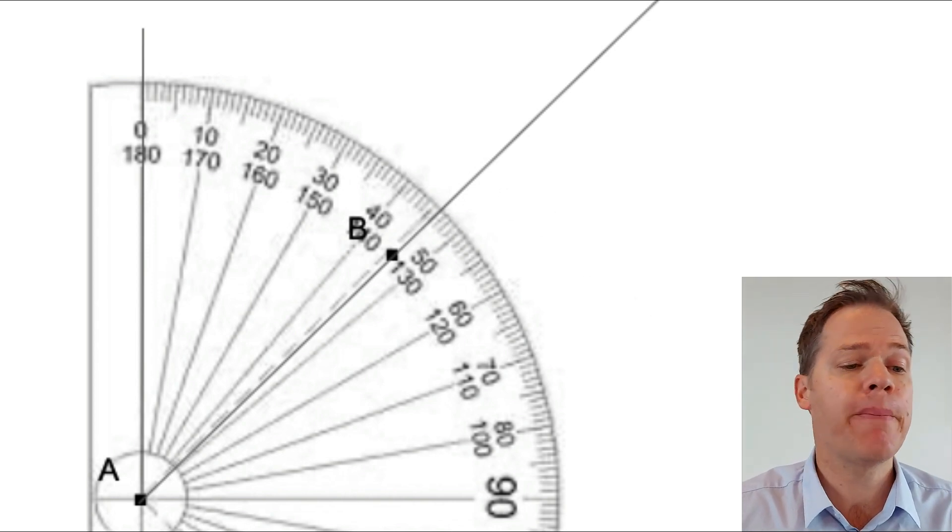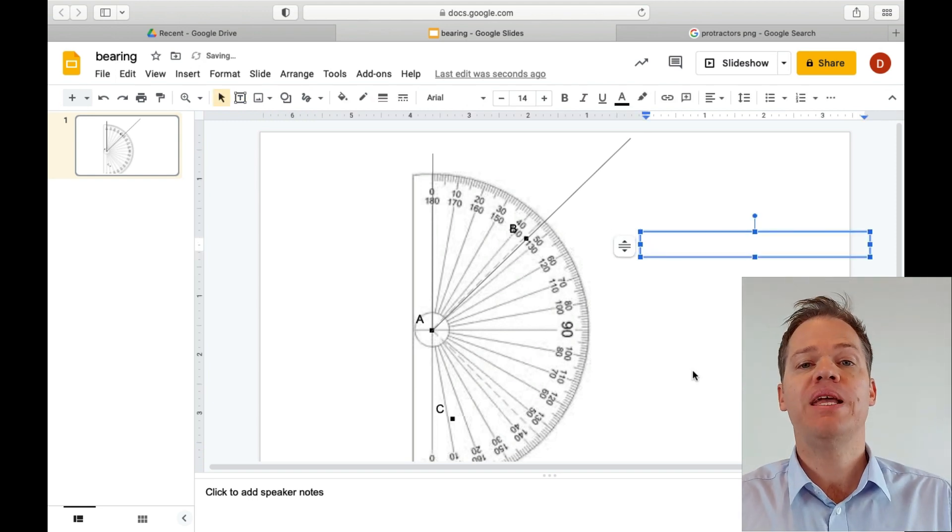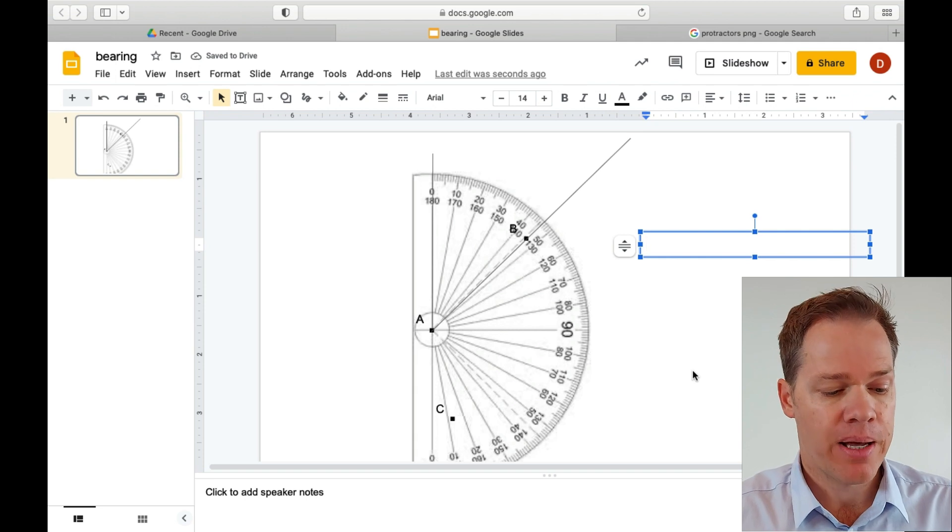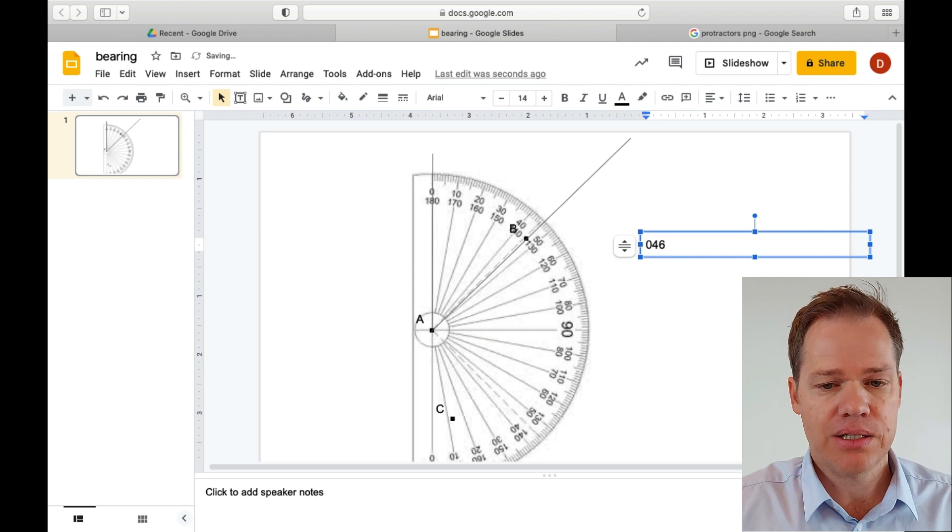But please remember, when you measure a bearing, and when you write down your answer, it should always be a three-digit number. So it's going to be 046 degrees.